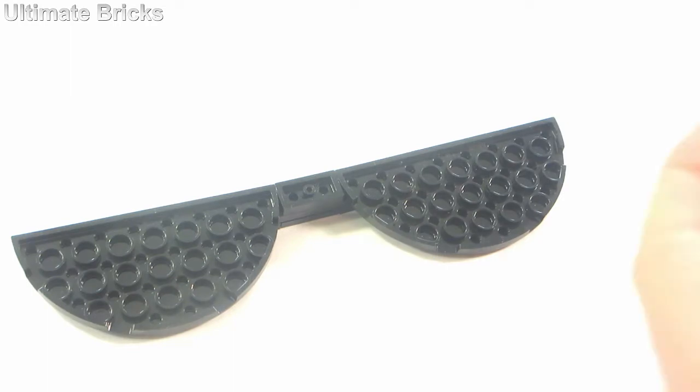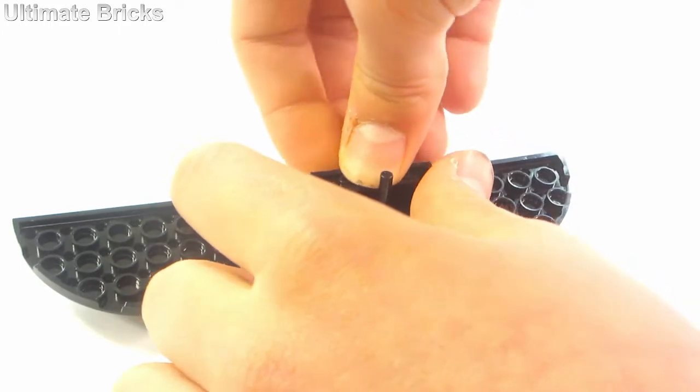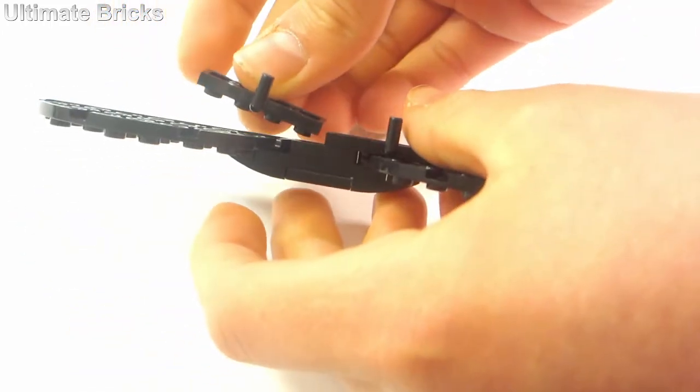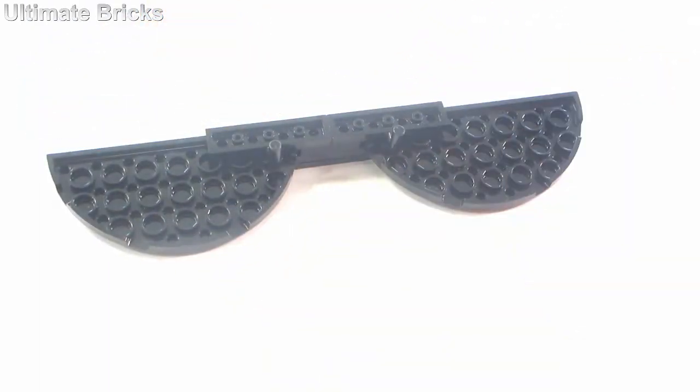And then for securing it on the back, you're going to take two of these pieces. They're usually used for trailer hitches. Anyways, just put those right there. So one stud over on the center piece and then extending outward so they're symmetrical.